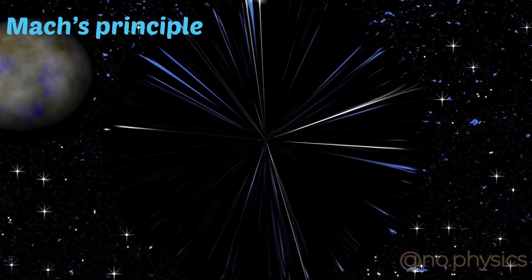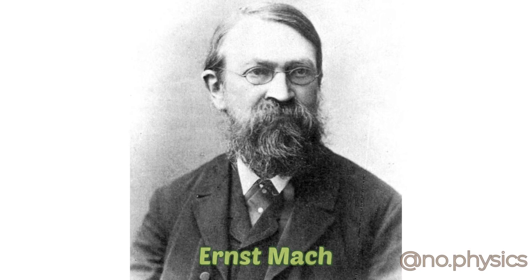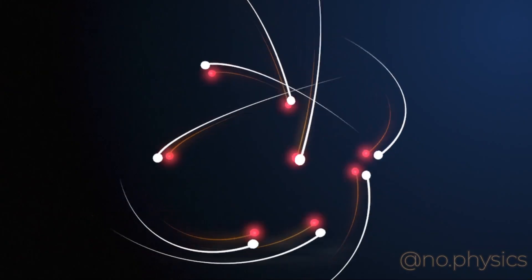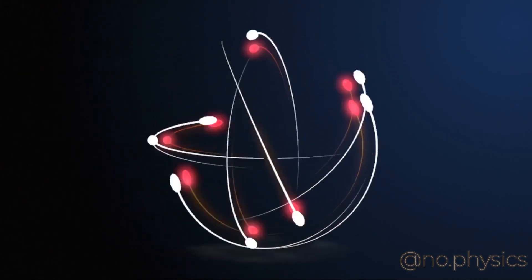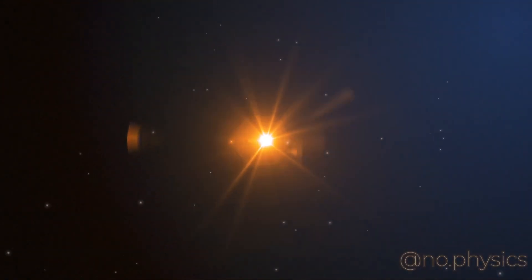Mach's principle is a concept in physics named after the Austrian physicist and philosopher Ernst Mach. The principle suggests that the local properties of space-time, such as its curvature or geometry, are determined by the distribution of matter in the universe.